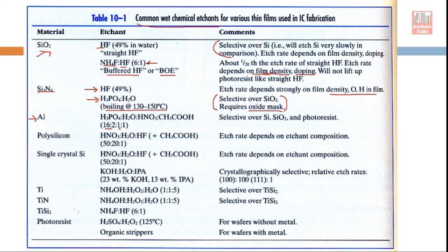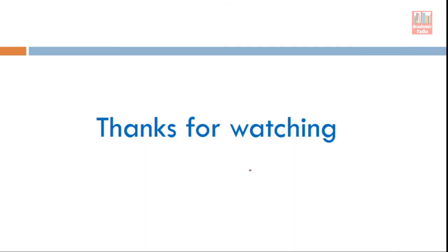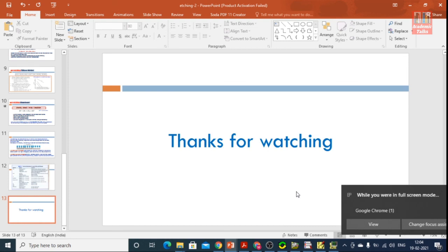For aluminium, the mixture discussed earlier — with a typical ratio — is highly selective over silicon, silicon dioxide, and photoresist, so only aluminium is etched. Other materials in the table follow the same pattern: the etchant is listed with comments on the process. You can read this chapter from the book, and if you have any questions you can discuss with me. This is all from my side — if you have any questions, you can discuss with me.